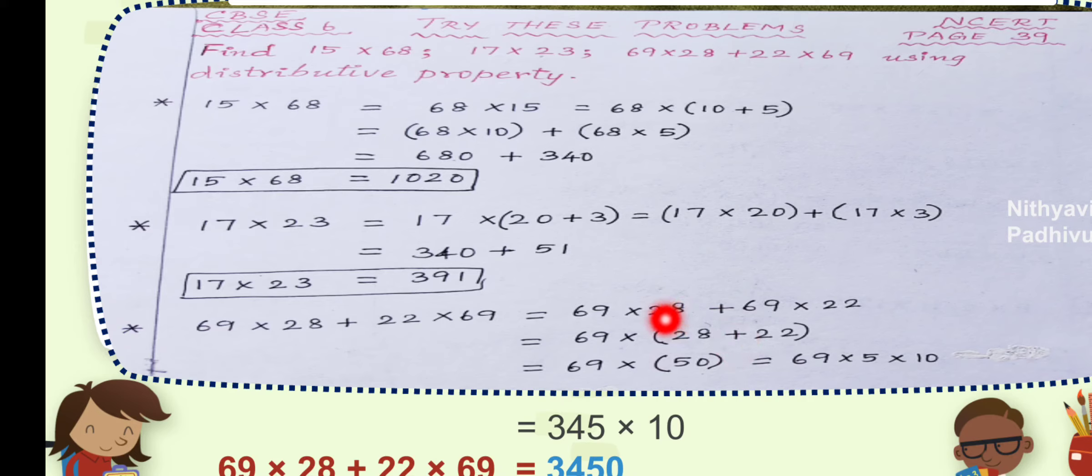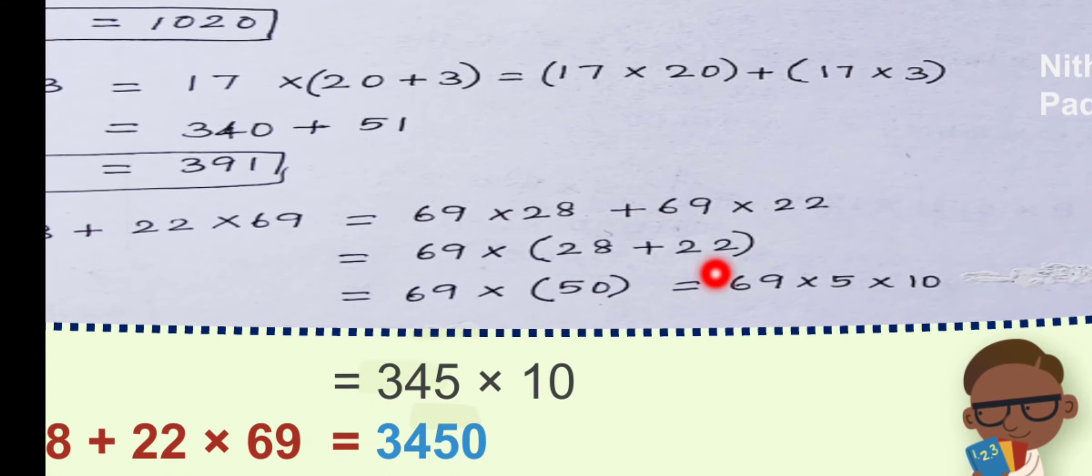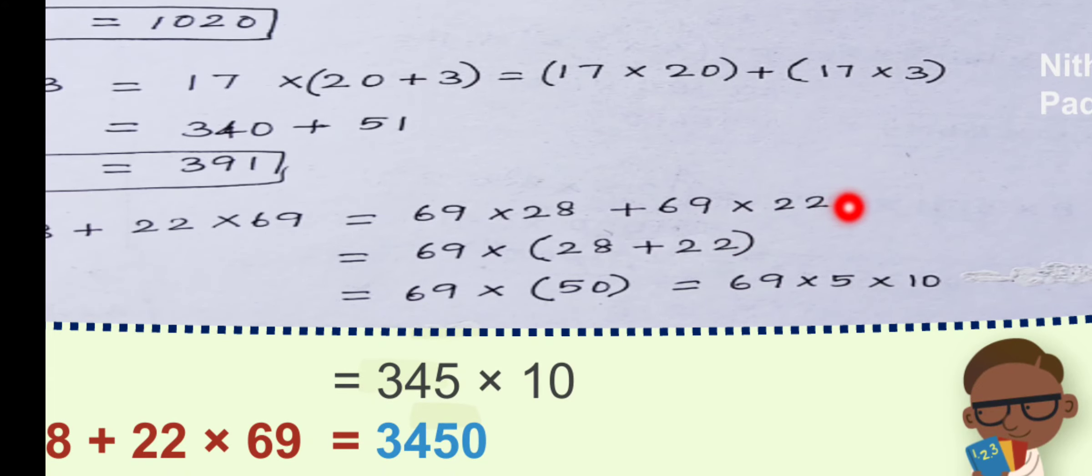See, in the second term, 69 into 22, we have already taken out 69 multiplied by. What is left over? 22 is left over. So, write 22 here. And nothing is there, so close the bracket.